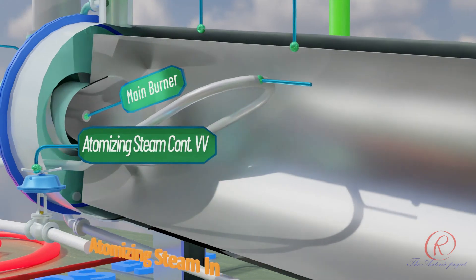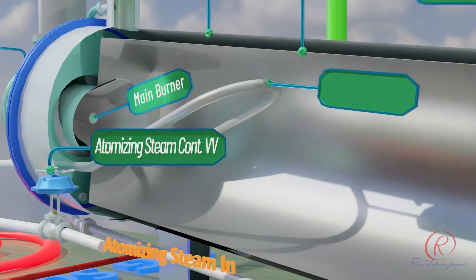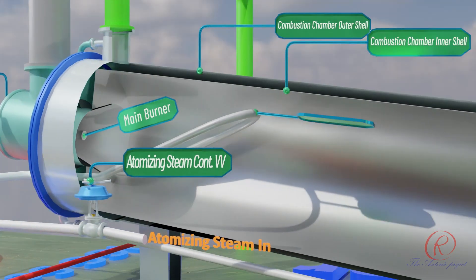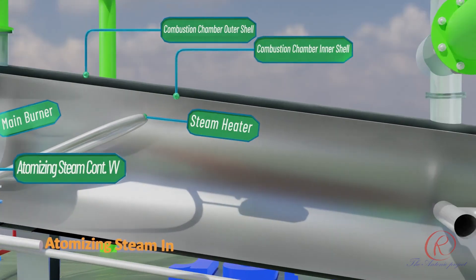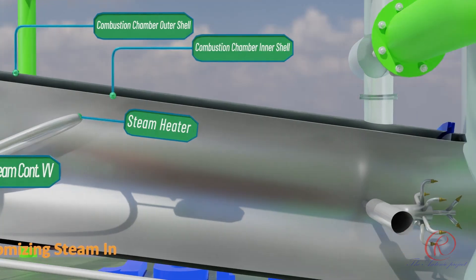Main burner: used as the primary burner to burn fuel by atomizing the fuel into droplets with a nozzle. Steam heater: to reheat the superheated saturated steam for atomizing the fuel in the main burner.